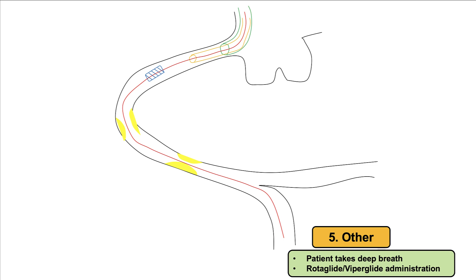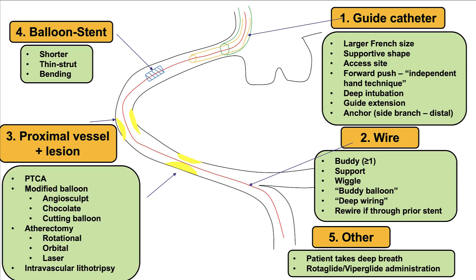The fifth and final category of techniques is asking the patient to take a deep breath, which might modify the location of the guide and straighten the coronary arteries, and also administering a lubricious agent such as Rotaglide or Viperglide during attempts to deliver equipment. In summary, there are five major technique categories for delivering balloons, stents, or other equipment through challenging coronary segments, and using those techniques or a combination of them can facilitate delivery in the vast majority of cases.